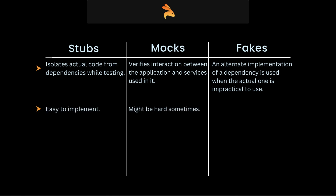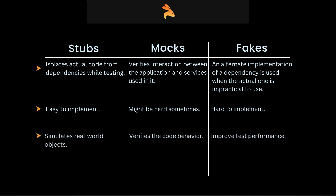Stubs are easy to implement, while it might be hard to implement mocks, and generally fakes are hard to implement. Stubs simulate real-world objects, whereas mocks verify the code behavior and fakes improve the test performance.